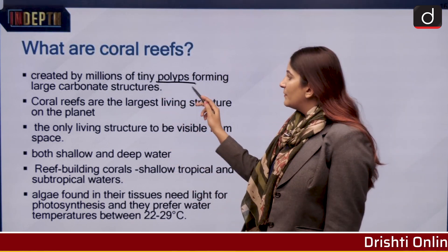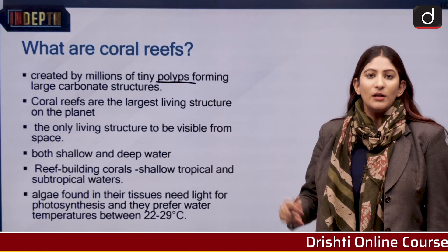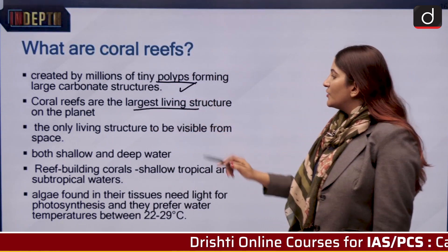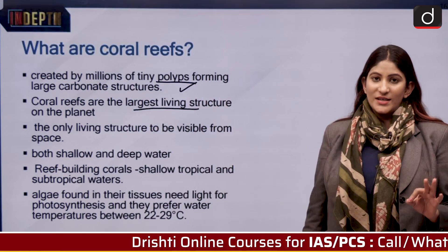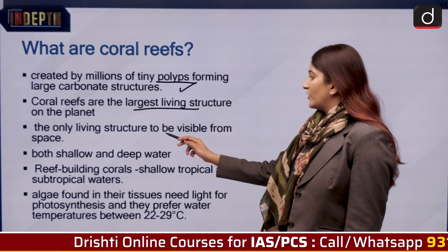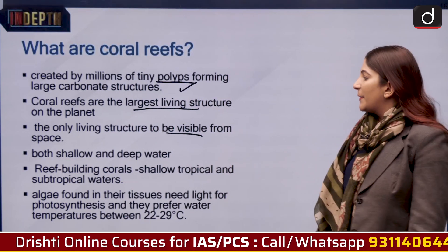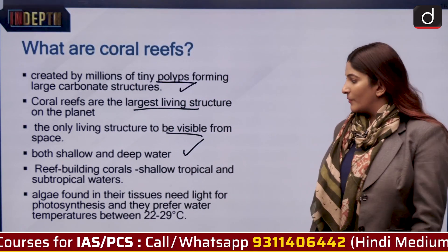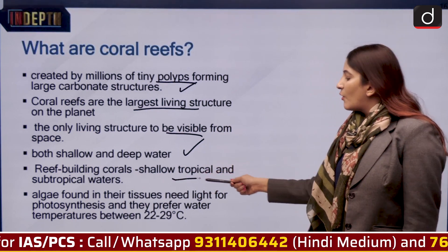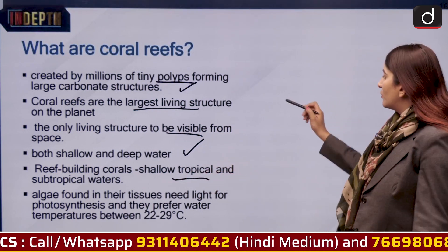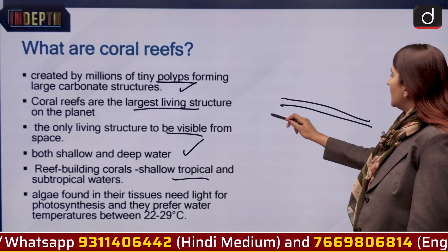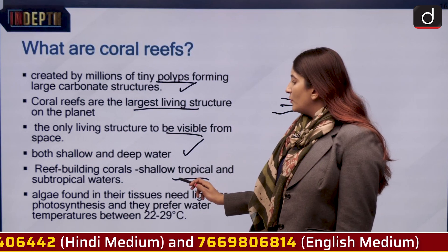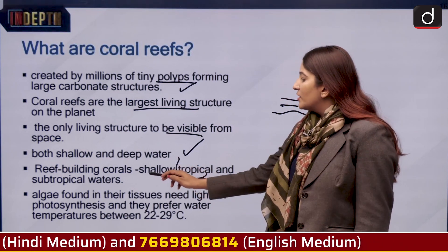Coral reefs are created by millions of tiny polyps which form a long carbonate structure. Coral reefs are the largest living structure on the planet, and interestingly the only living structure that can be seen from space. They live in both shallow and deep water.